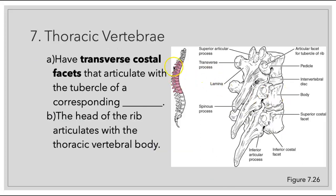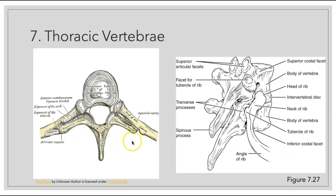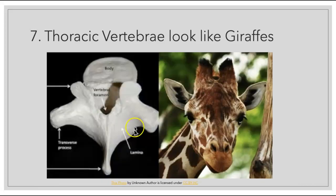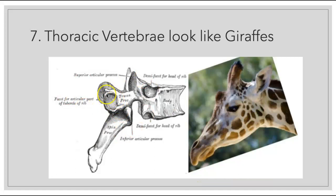Then we have our thoracic vertebrae, found within the thorax region. On the transverse processes you will find the transverse costal facet that articulates with the tubercle of a corresponding rib. The head of the rib then articulates with the body of the thoracic vertebrae. To identify a thoracic vertebra, they tend to look like a giraffe with a long, more pointy spinous process, and you'll also want to look for the transverse costal facet because no other type of vertebra will have that.